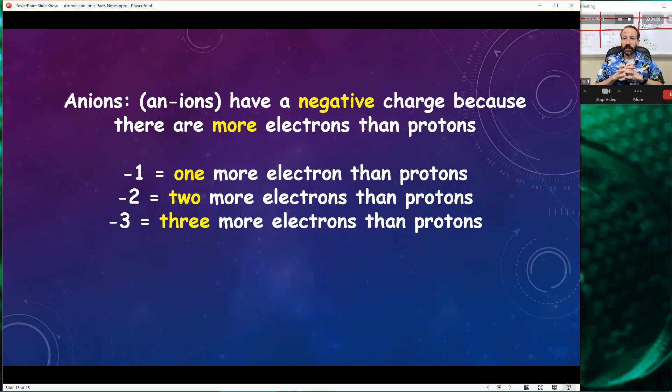The second kind of ion is an anion. An anion is negative because it's got more. So here's my atom and more electrons come and join in. With more negative on the outside than positive in the nucleus, it's going to be negative. If I have one additional negative electron, I should be negative one. If I have two additional negative electrons, I should be negative two. If I have three more negative electrons, I should be negative three.